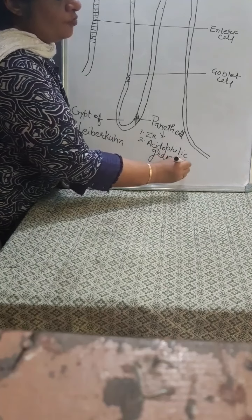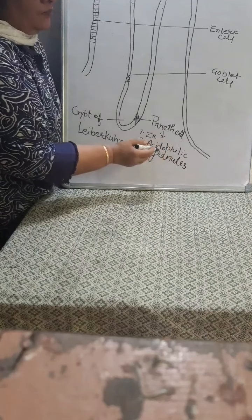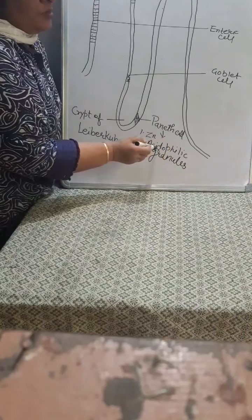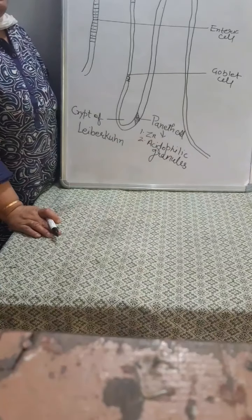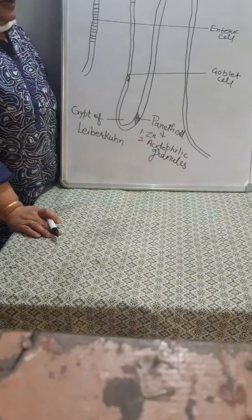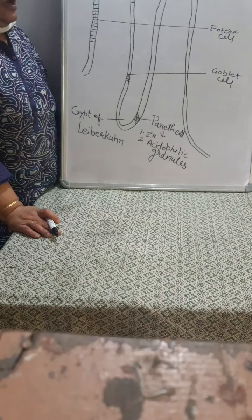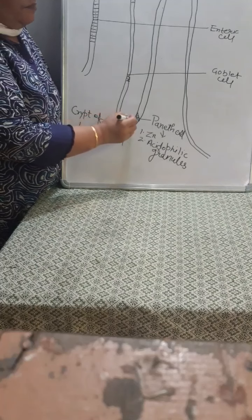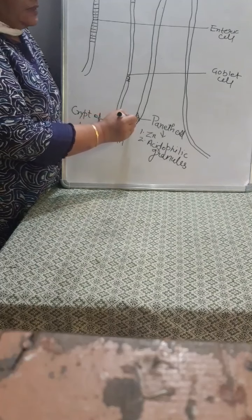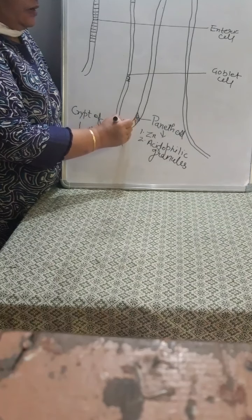What is the meaning of acidophilic? 'Acido' means acid and 'philic' means loving — so acid-loving granules which can be stained by an acid dye. Acid dye means any acidic stain. These are the Paneth cells.